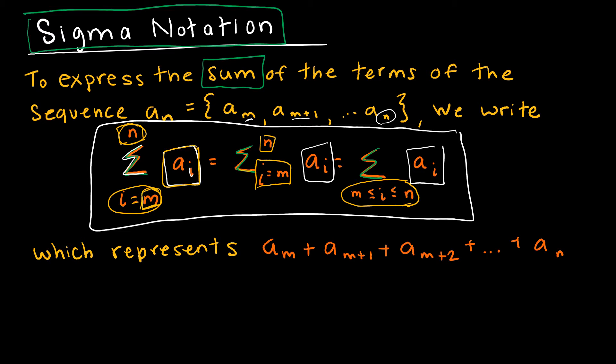So again, any of these things say the same thing, and that says we're going to take a sub i where i starts at m and then continues to increase by one, m plus 1, m plus 2, all the way up until we get to whatever our upper value is, our upper limit - that's going to be the last one.